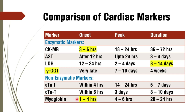For MCQ purposes: if the question asks which is the earliest cardiac marker without specifying enzymatic or non-enzymatic, and both myoglobin and CKMB are options, choose myoglobin. If the stem specifically asks which is the earliest enzymatic marker, and both CKMB and myoglobin are options, choose CKMB. To summarize: earliest enzymatic marker is CKMB, earliest non-enzymatic marker is myoglobin, and when nothing is specified, the earliest cardiac marker is myoglobin.